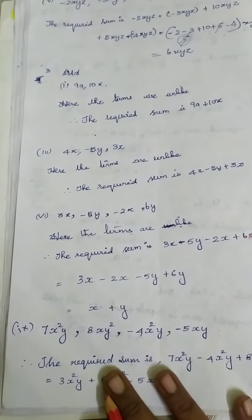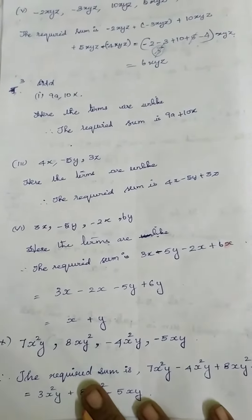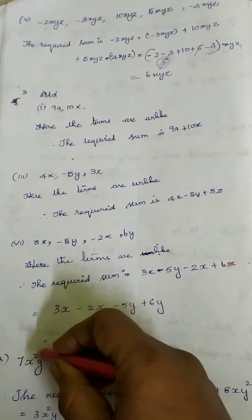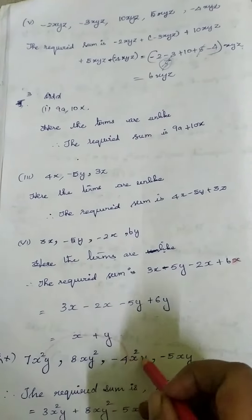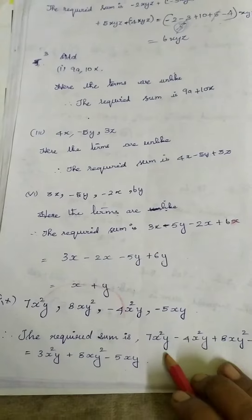And your problem number 9 is: 7X²Y, 8XY² minus 4X²Y minus 5XY. Here you have 1 pair of like terms, 2 unlike terms. So just we are using the word 'the required sum is'.